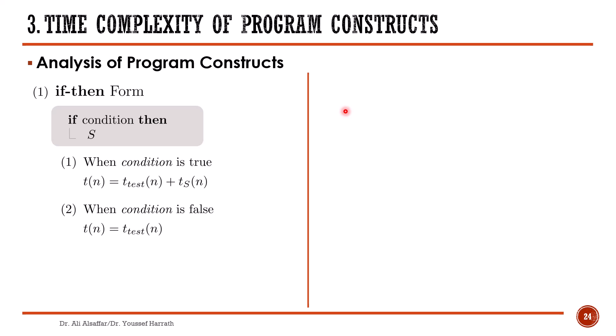To understand how algorithms are analyzed to get the time complexity, you need to understand how to analyze basic program constructs such as selection and loops. We will start with the selection statements, and here we will cover two types of if statements.